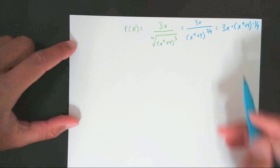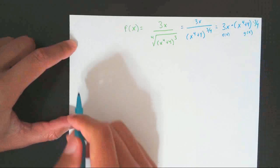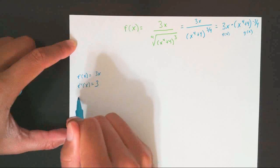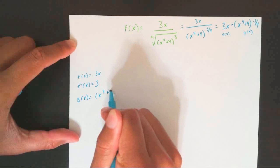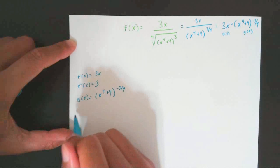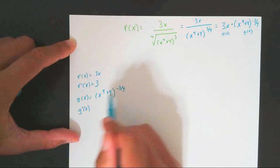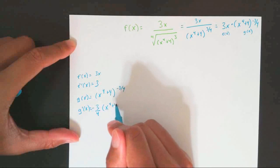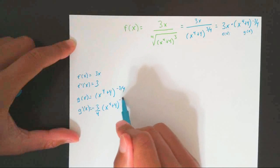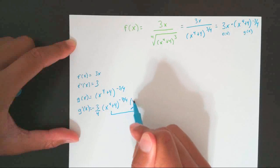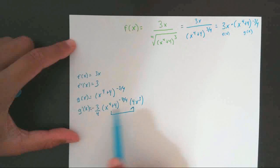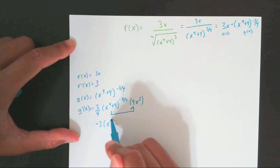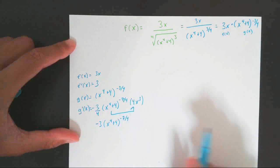So I'm going to do the same thing: I'll say f(x) equals 3x, so f prime of x equals 3. g(x) equals (x to the fourth plus 4) raised to negative three over four. To find this derivative I have to do chain rule: bring the exponent negative three over four to the front, keep the inside x to the fourth plus 4 the same, subtract one from the exponent to get negative seven over four, then find the derivative of the inside which is 4x cubed. Multiplying — negative three fourths times 4x cubed — the fours cancel, leaving negative 3x cubed times (x to the fourth plus 4) to the negative seven over four.